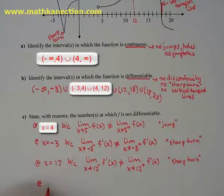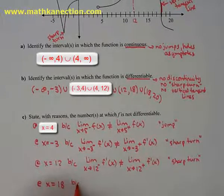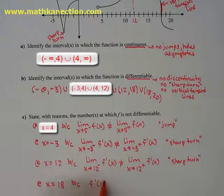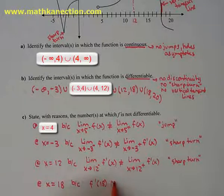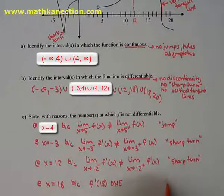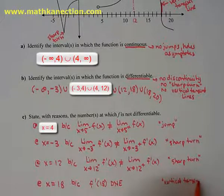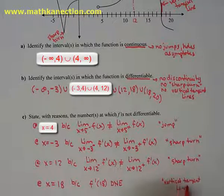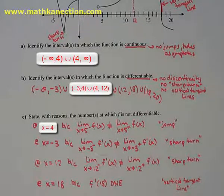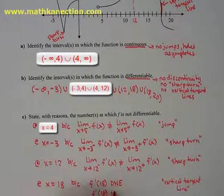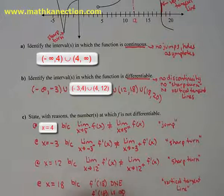The last x value where f is not differentiable is x equals 18. At x equals 18, we have that vertical tangent line. This means that the slope at 18 does not exist, which creates that vertical tangent line. So f prime of 18 does not exist. Think of it also as f prime of 18 approaching infinity.